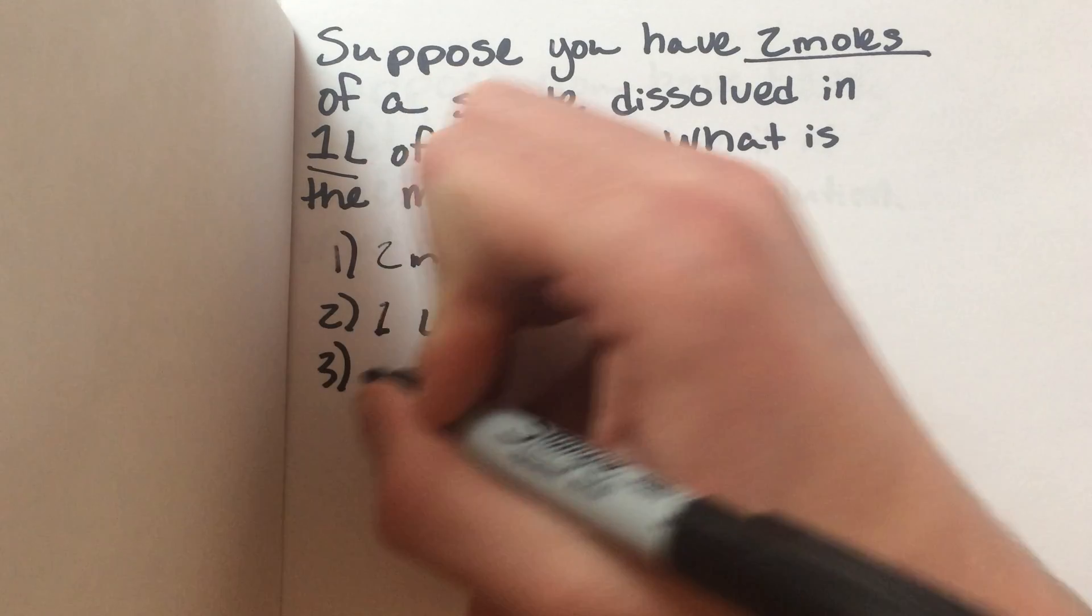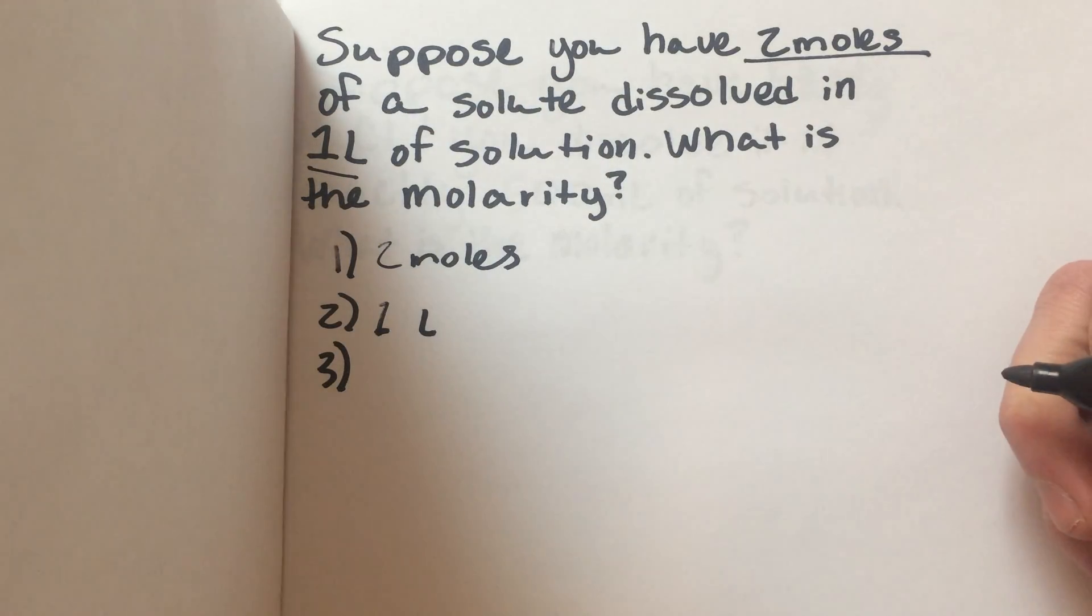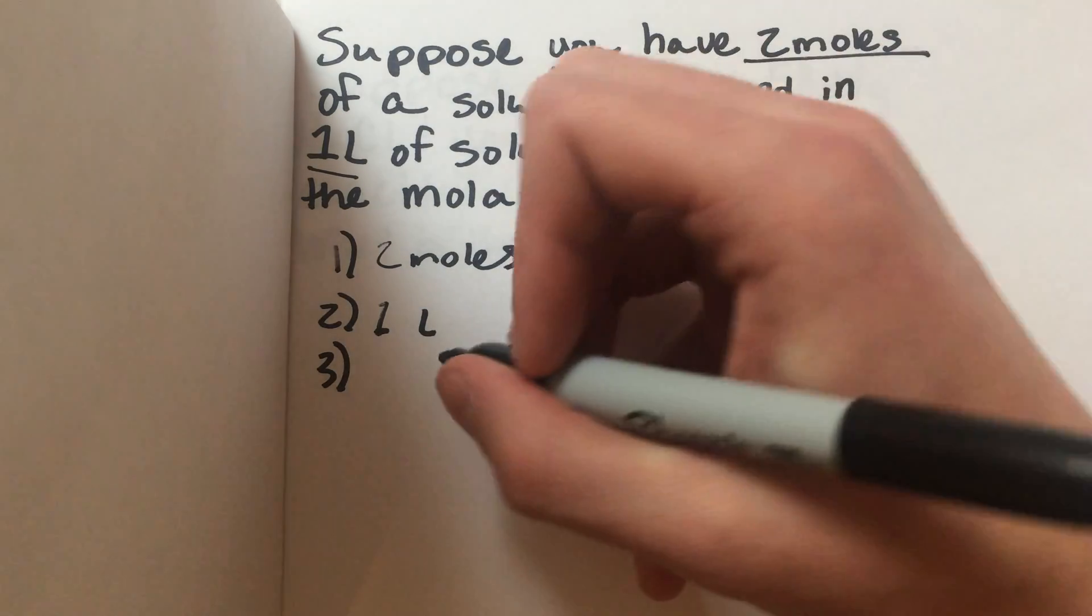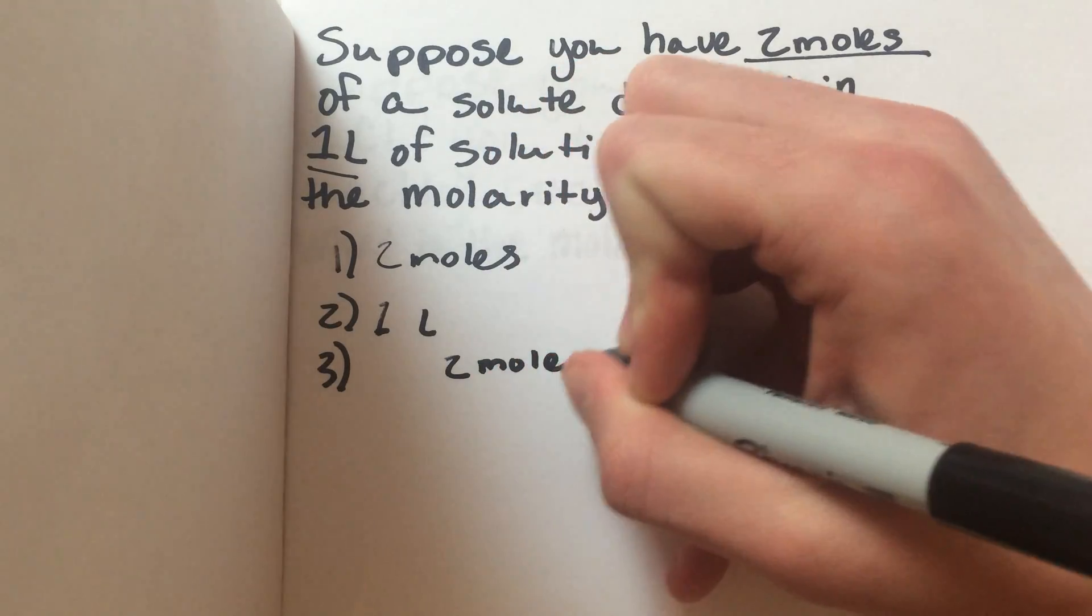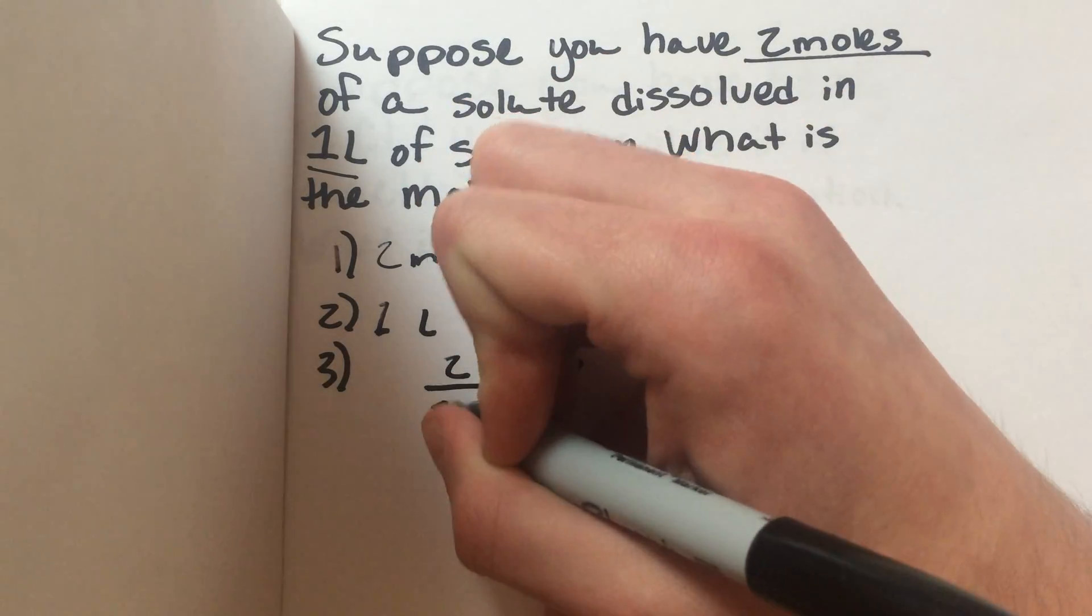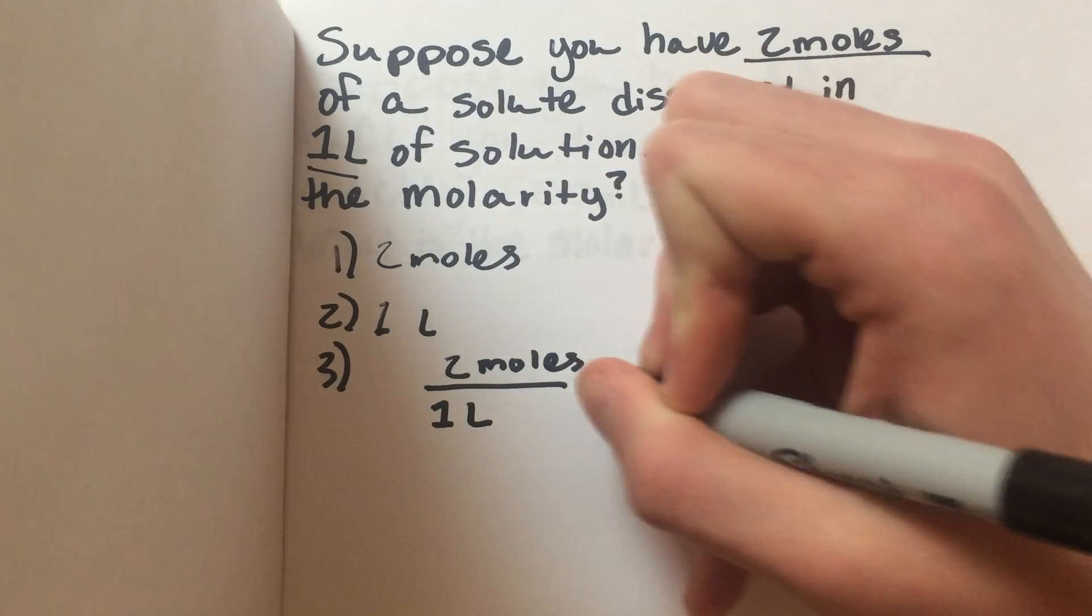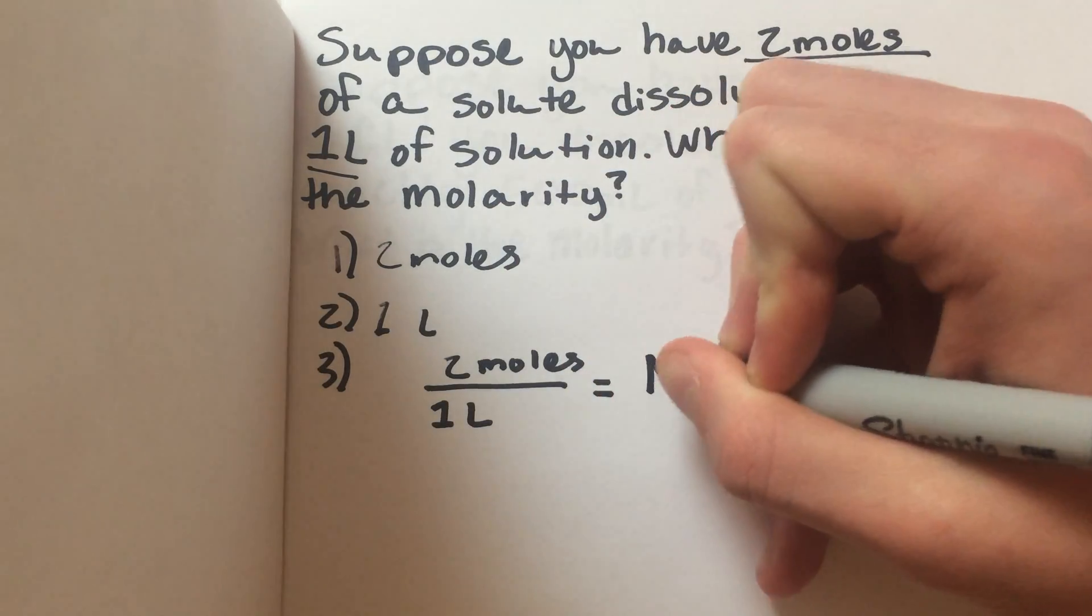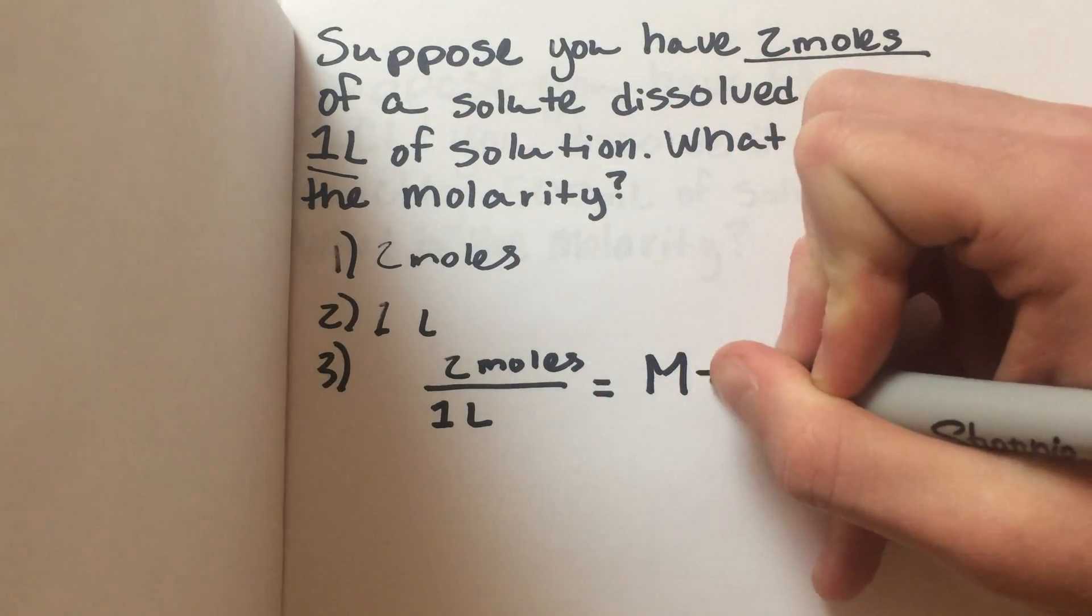Our third step is to divide. Since molarity is defined as moles of solute over liters of solution, you're going to put your two moles over your one liter. That will give you a molarity of two.